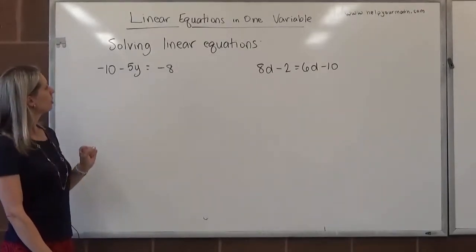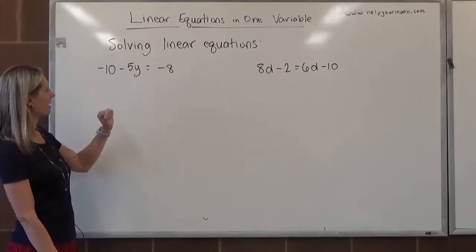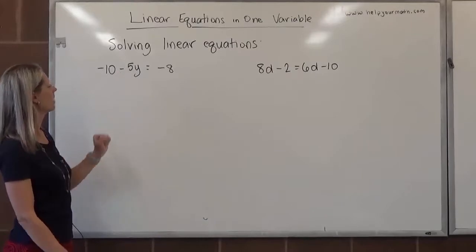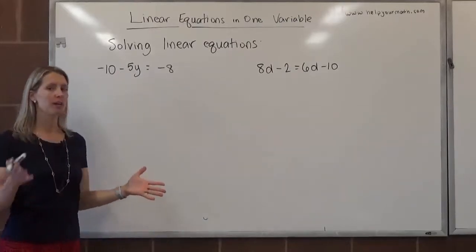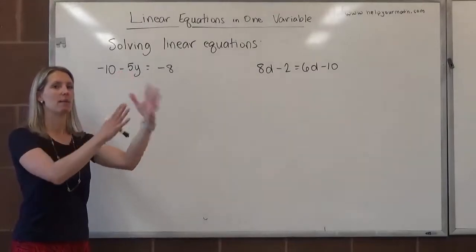To undo what's going on here, we have negative 10 being added to it and then minus 5y. The first thing we're going to want to do is like the reverse of order of operations. All these things happen to y and now we have to undo them.